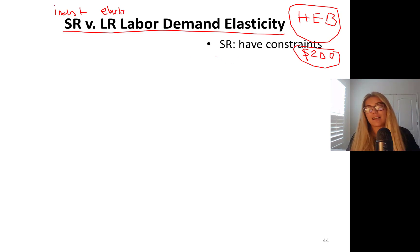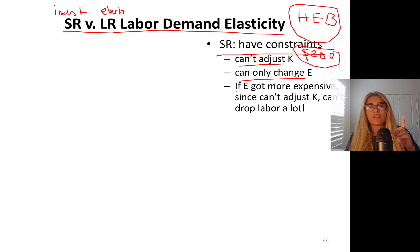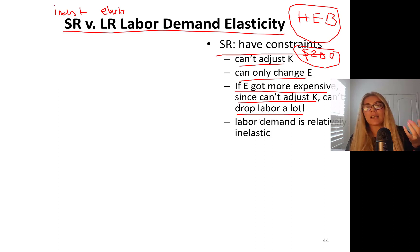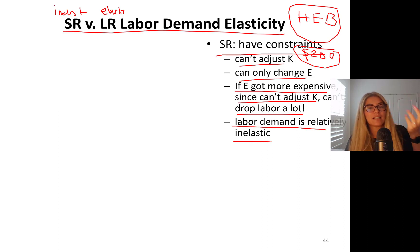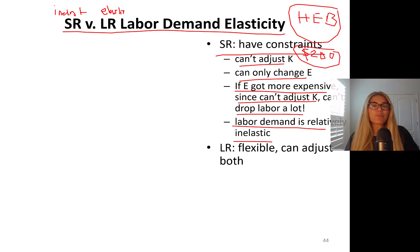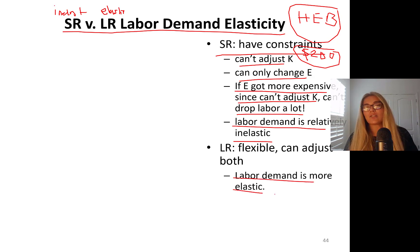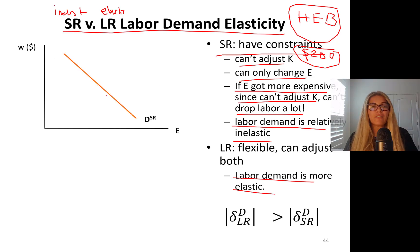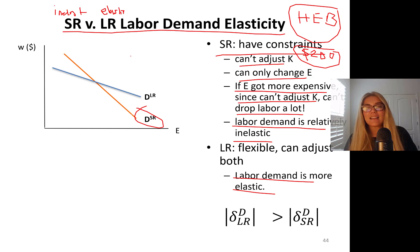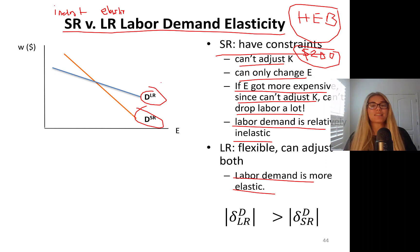In the short run we have constraints — you can't adjust your capital, you can only change your labor. So labor demand is relatively less responsive in the short run — it's inelastic. In the long run, your demand is more flexible; you can adjust both labor and capital freely, so labor demand is more elastic. On the graph, the short-run demand curve is steeper — more inelastic — and the long-run demand curve is flatter — more elastic.